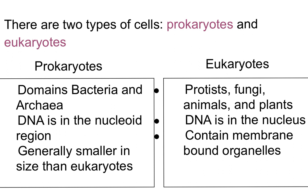Photosynthetic bacteria have enzymes that capture light through a particular membrane known as a chloroplast. Other prokaryotic cells have cell walls, but they differ in composition from the cell walls of eukaryotes. Examples of prokaryotes include E. coli and cyanobacteria.